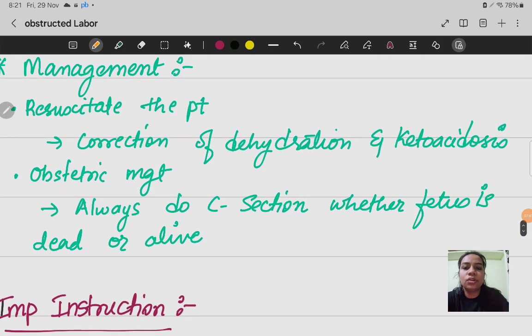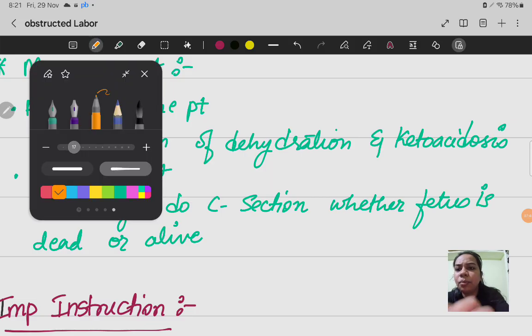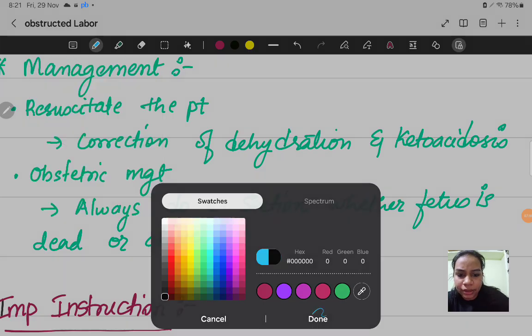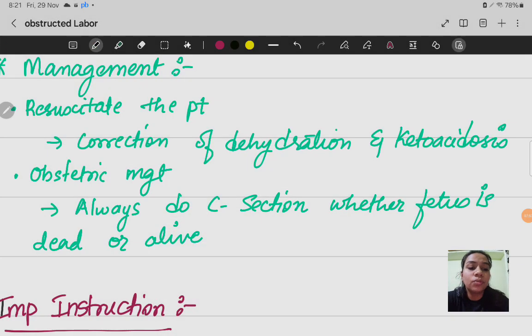Next is the management. How do we manage the patient? First, mother is tired, exhausted. She needs fluid correction. She is dehydrated, having acidotic breathing, so you have to first correct the dehydration and ketoacidosis.